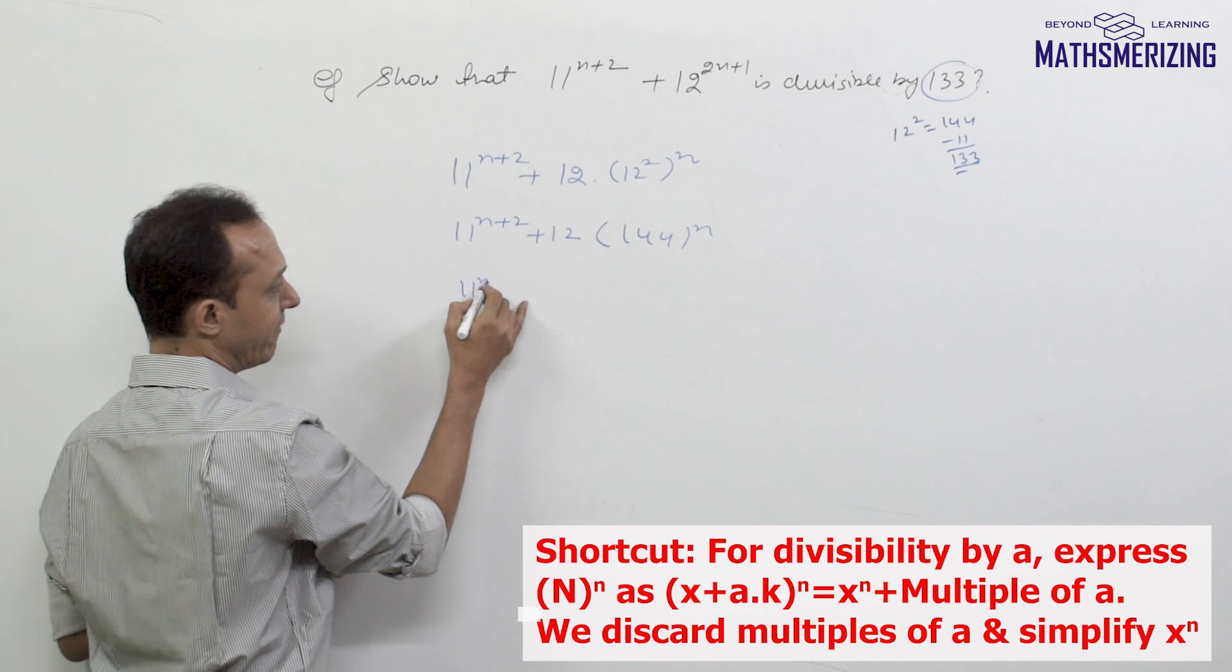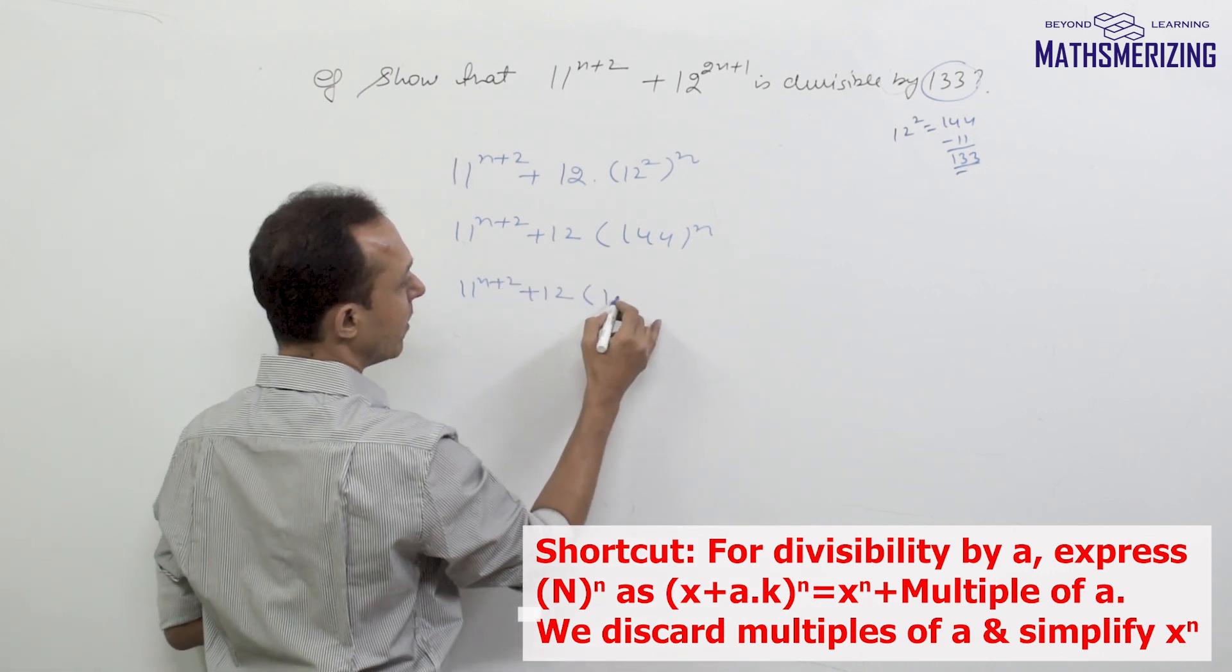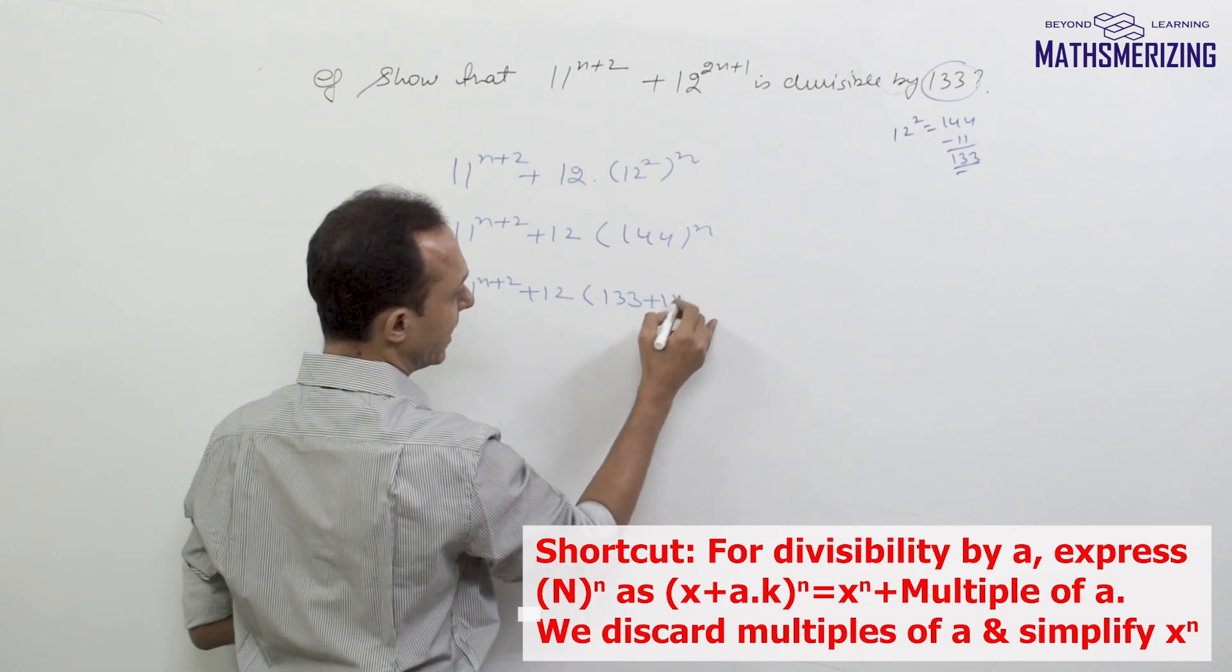So this is 11^(n+2) + 12 × 144^n. Here I'll write 144 as 133 + 11, giving 11^(n+2) + 12 × (133 + 11)^n.